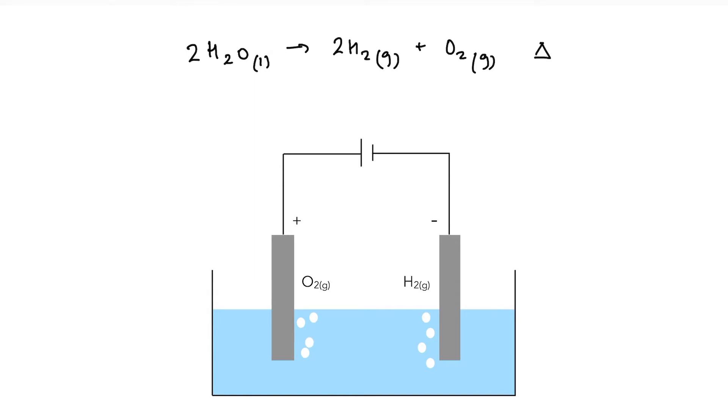If we have a look at the value for Gibbs energy, it is exceedingly positive indeed, plus 474 kilojoules per mole. And the value for E cell is minus 1.23. For a spontaneous reaction, we need a positive E cell value and a negative value for Gibbs energy change.